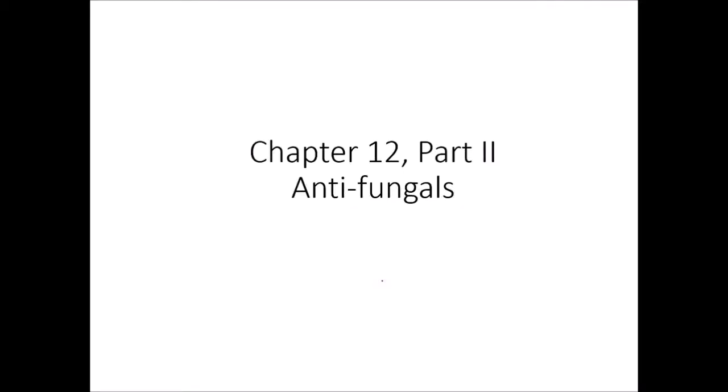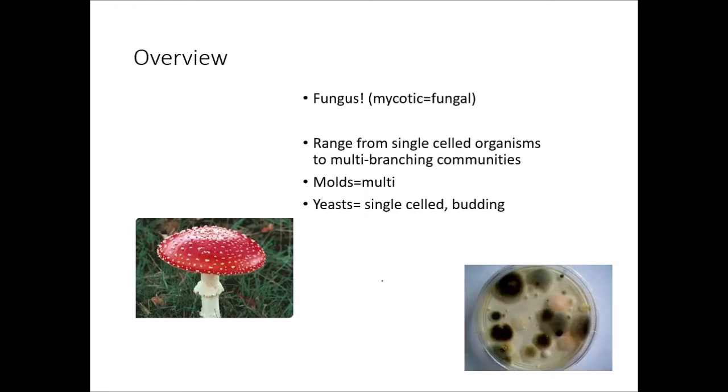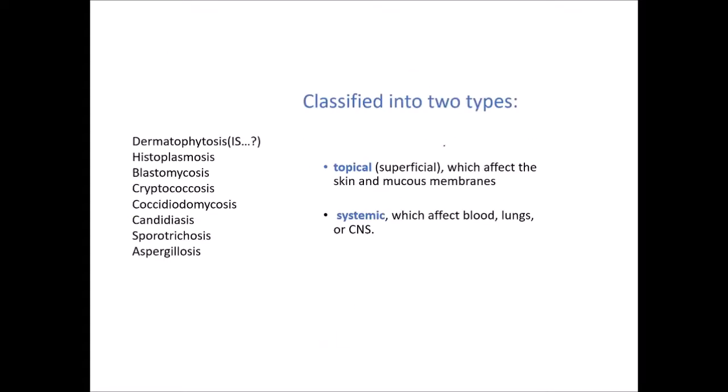This is chapter 12, part 2: antifungals. A fungus is a mycotic agent, or mycotic, which is fungal. Funguses range from single-celled organisms like yeast to multi-branching communities, like this fuzz here or this mushroom. When talking about funguses on the animal, they are classified into two types: topical or superficial, which affects skin and mucous membranes including the GI tract, or systemic, which affects the blood, the lungs, or the CNS. Fungal infections through the blood into the bone have also been observed.